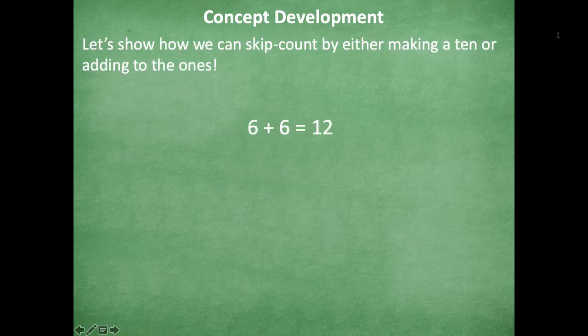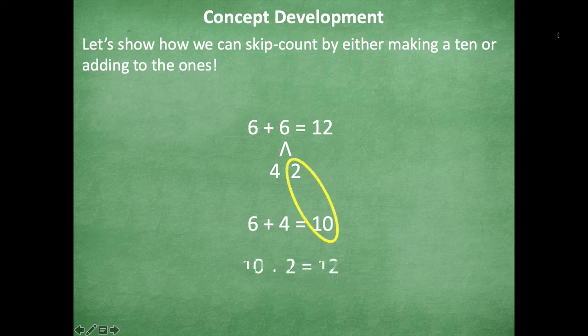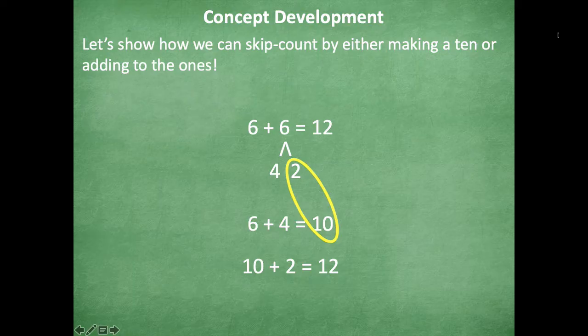Okay. All right. So let's show how we can skip count by either making a ten or adding to the ones. So this is where we're going to be using those number bonds to decompose like we talked about in our learning goal. So here we have 6 + 6 = 12. So I know that I can break apart my six into a four and a two. If I do that, I can combine to make a ten because 6 + 4 = 10. And then I have to add what I have left, which is 10 + 2 = 12.